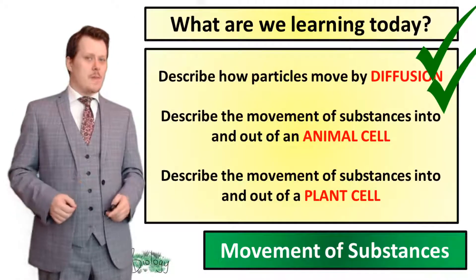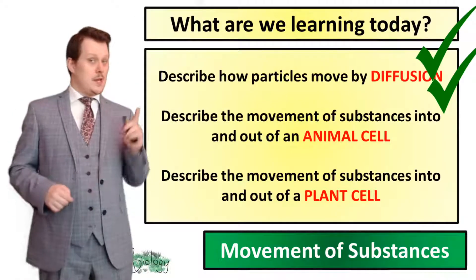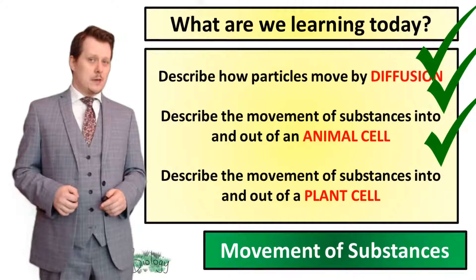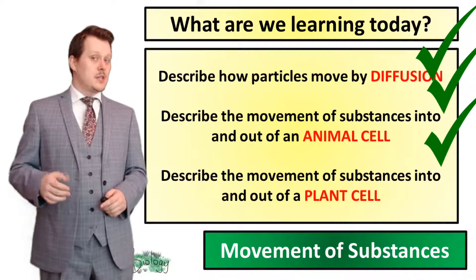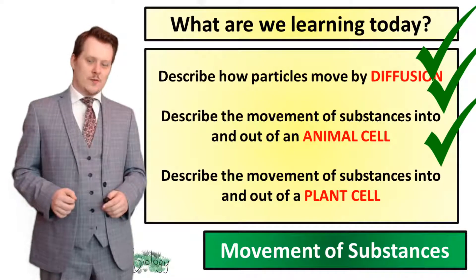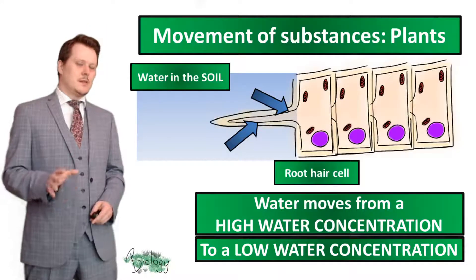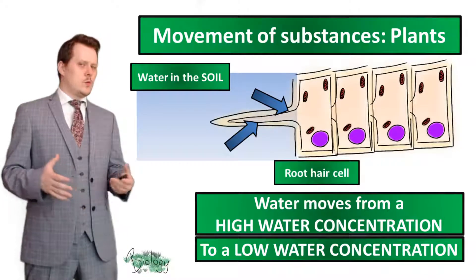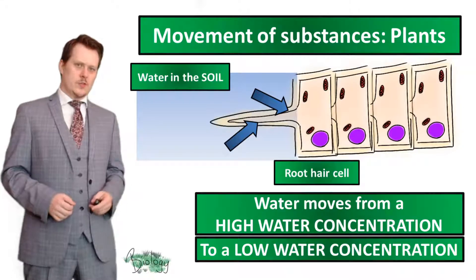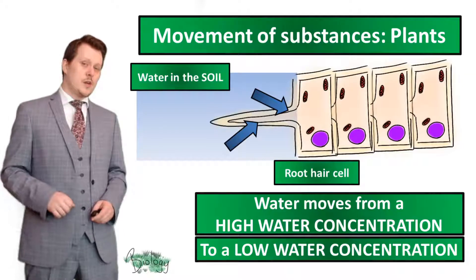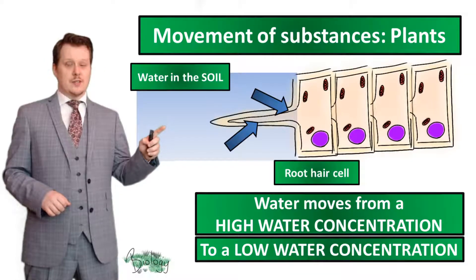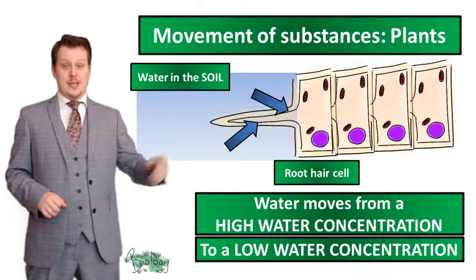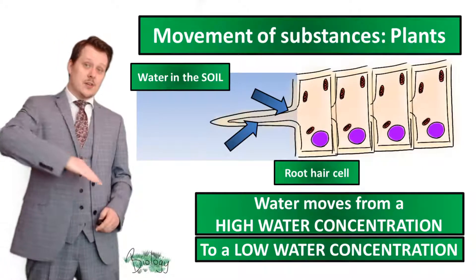So now we can describe the movement of substances into and out of an animal cell. We also related this to the function of the mitochondria, which will prepare us for the aerobic respiration topic. Now let's look at the movement of substances in plants. When you water a plant, there is a lot of water in the soil. This water moves from an area of high concentration in the soil to an area of low concentration into the plant cell, down its concentration gradient, moving from the soil into the root hair cell.